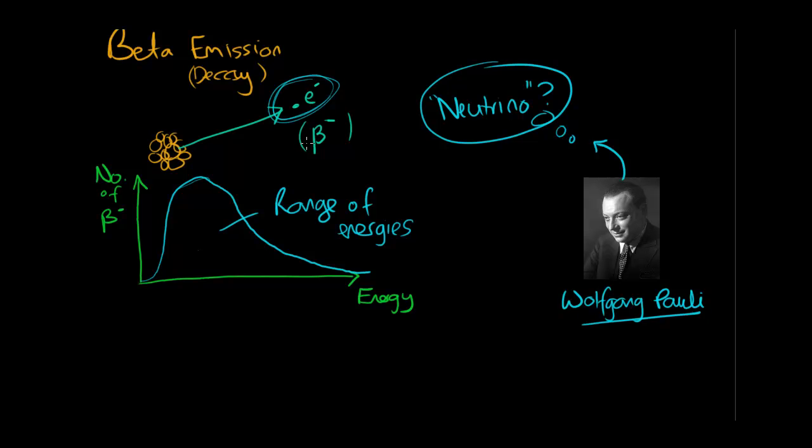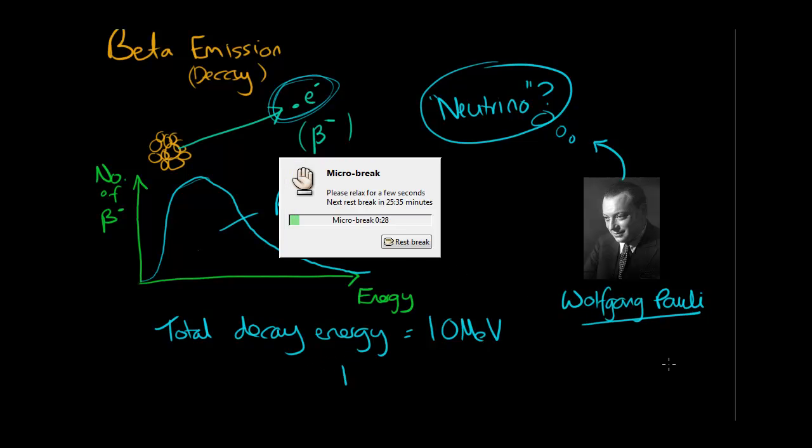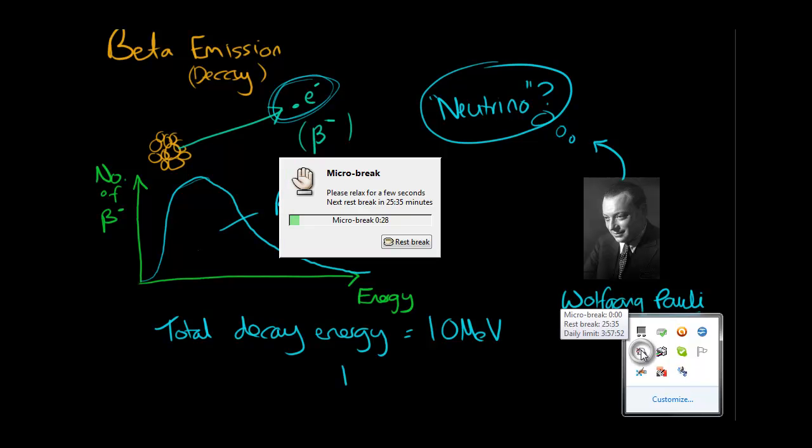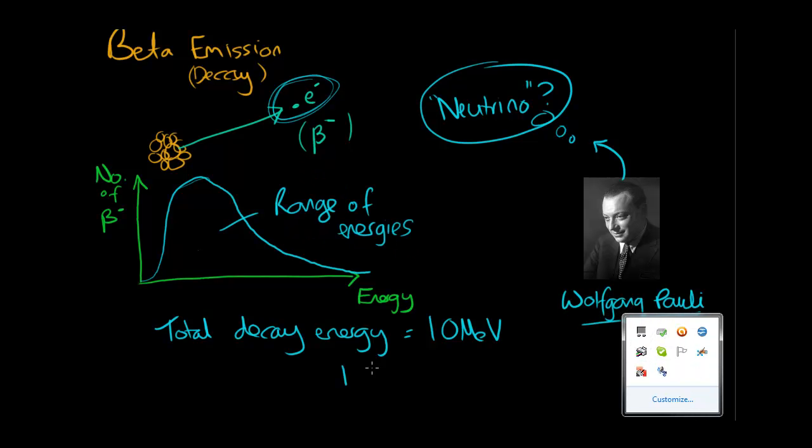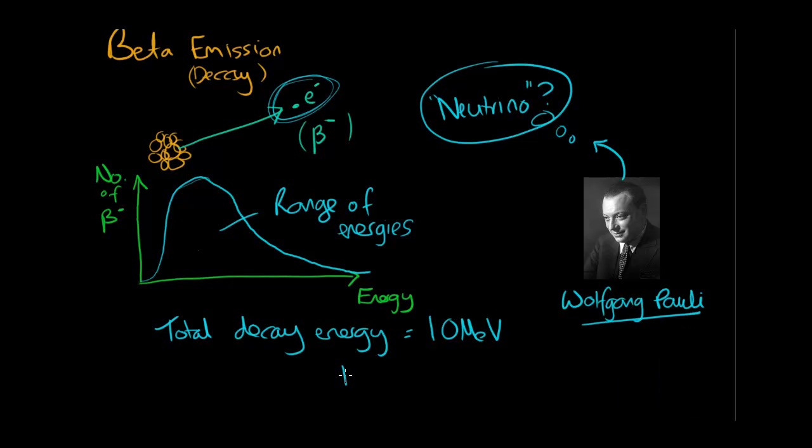So for example, if the total decay energy equals, these aren't correct, I'm just picking these out of the air, if it was 10 mega electron volts, then one possibility is that the beta particle got, let's say, maybe six of these mega electron volts of kinetic energy.